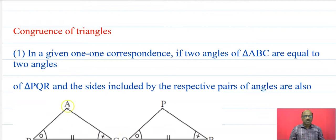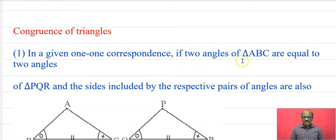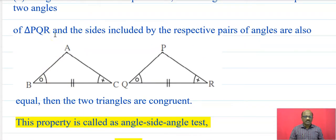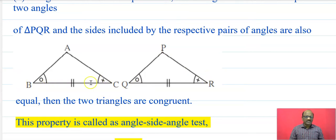Now let us learn congruence of triangles. In a given one-to-one correspondence, if two angles of triangle ABC are equal to two angles of triangle EQR, and the side included by the respective pairs of angles are also equal, then the two triangles are congruent. That is, in triangle ABC and triangle EQR, angle B is congruent to angle Q, angle C is congruent to angle R, and side BC is congruent to side QR. Then these two triangles are congruent by the ASA test.